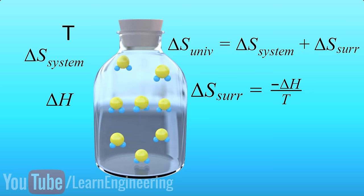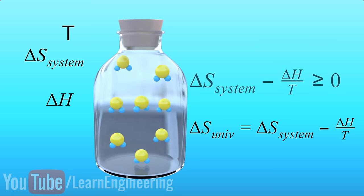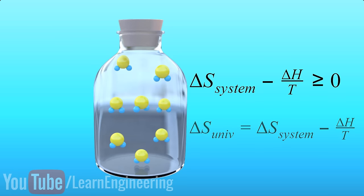Thus you can easily represent the entropy change of the universe as this. If this quantity is greater than zero, then this reaction is feasible. Now let's have a rearrangement of this equation. Since the temperature T is always positive, if I multiply by minus T, the inequality equation will become like this.